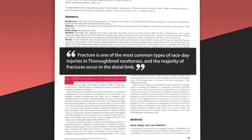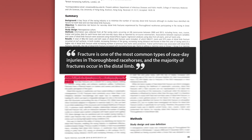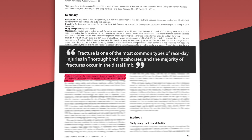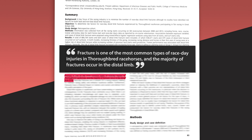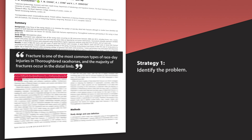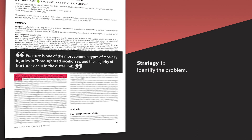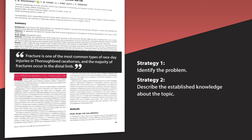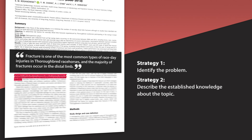'Fracture is one of the most common types of race day injuries in thoroughbred racehorses, and the majority of fractures occur in the distal limb.' In this example, it tells us that distal limb fractures occur frequently, so naturally it's important to understand why they happen.